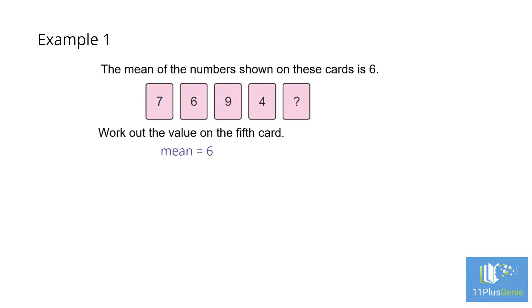We are given a mean of 6 and a count of 5. We can immediately work out the total for the numbers on the cards. Total equals mean times count, which is 6 times 5, which equals 30.